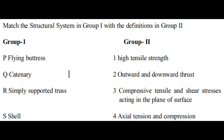Next question: match the structural system in Group 1 with the definitions in Group 2. Group 1 has: flying buttress, catenary, simply supported truss, and shell. Group 2 definitions are: high tensile strength; outward and downward thrust; compressive, tensile and shear stresses acting in the plane of surface; and axial tension and compression. The correct answer is P2 — flying buttress has outward and downward thrust. Q1 — catenary has high tensile strength. R4 — simply supported truss has axial tension and compression. S3 — shell structure has compressive, tensile and shear stresses acting in the plane of surface.